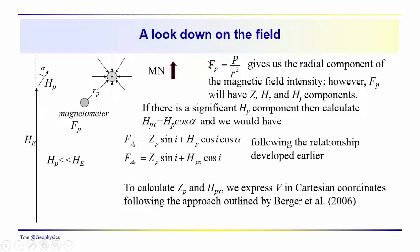So if there is this, we're dealing with this magnetic field intensity here. We want to get the vertical, horizontal, x and y components. If there is a significant H sub y component, then we would have to calculate the projection of H sub P onto the x-axis in order to get the north-south component, which is going to be the component that contributes to the anomalous field intensity.